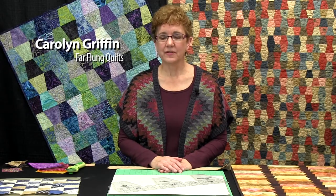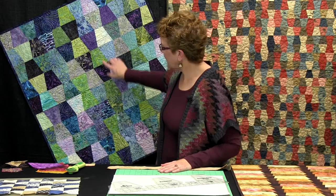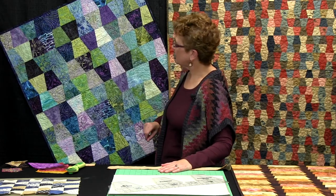Hi, I'm Carolyn Griffin, and I'm one of the designers behind the Double Strip Ruler for Creative Grids. With the Double Strip Ruler, we work with 4½ inch strips, and you can see here one of the quilts made using that.